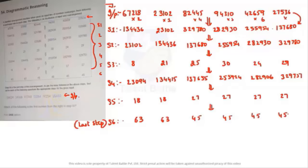6 fours are 24, and 6 nines are 54, so this must be 6. For the next one, 6 twos are 12 but 6 sixes are 36, so it is not 6. Can it be 5? 5 sixes are 30, 5 twos are 10, plus 3 gives 13. So the multiplication pattern is 1, 2, 3, 4, 5, 6 — that is the input to step one.